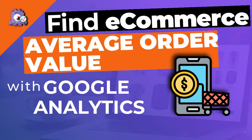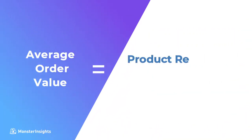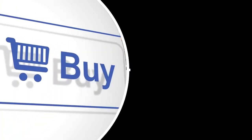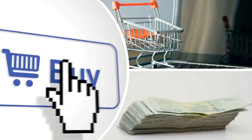Want to know how to find your average eCommerce order value for products in Google Analytics? Your average order value tells you how much revenue each order brings in, and it's found by dividing the product revenue by the total number of transactions. Just like improving your conversion rate encourages more users to buy from your site, improving your average order value is going to boost your sales and increase your revenue.